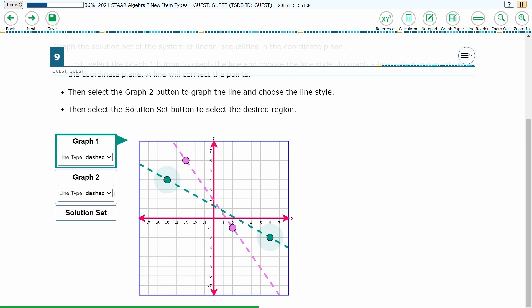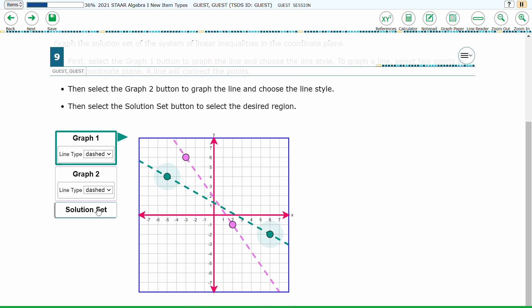Once the lines are in place, the student must select solution set, which will then be outlined in blue. The student must then select the area of the coordinate plane that is the solution set for the system of inequalities that were given.